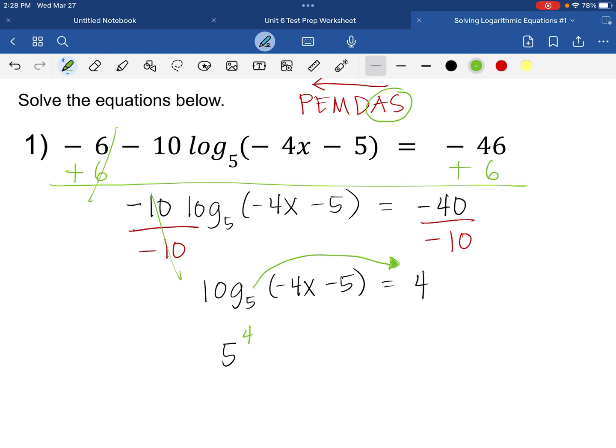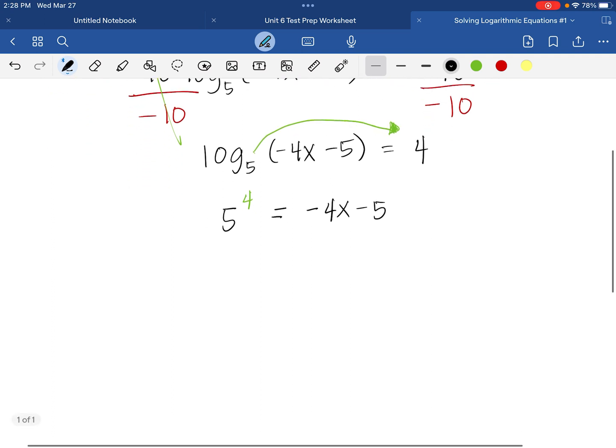Equals negative 4x minus 5. So 5 to the power 4 is 625 equals negative 4x minus 5.